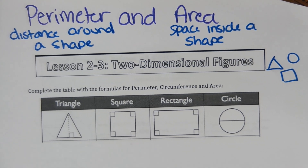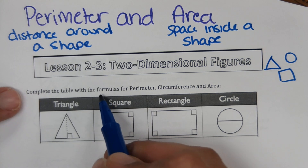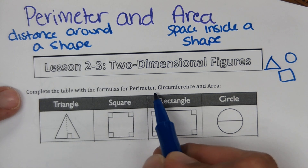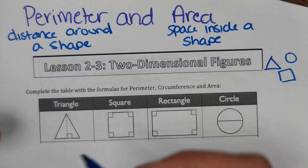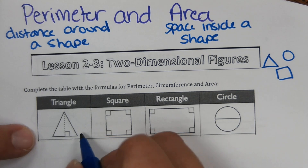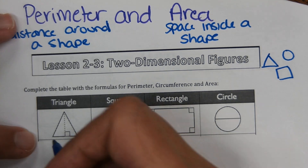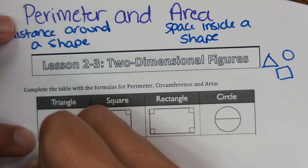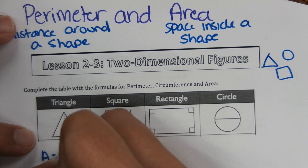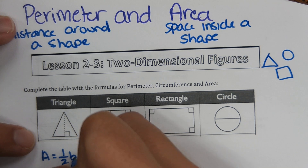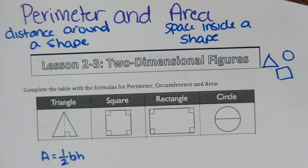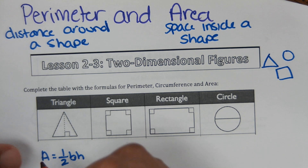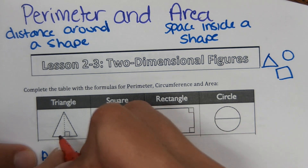It says complete the table with the formulas for perimeter, circumference, and area. We're going to start with the formulas for area, and a lot of this should be review. The area of a triangle is one-half base times height. That's not on the reference sheet, so it's something you need to have memorized.